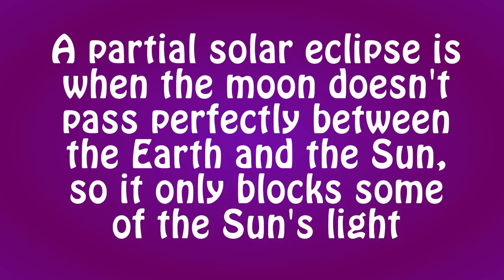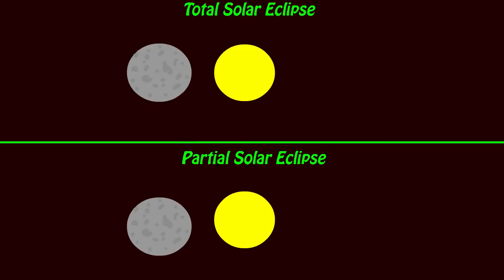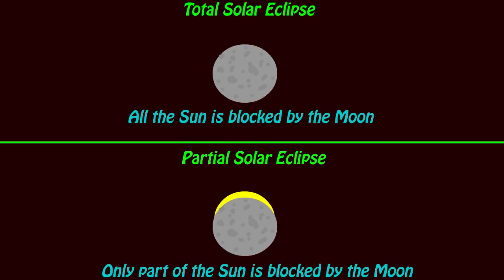A partial eclipse is when the moon doesn't pass perfectly in between the Earth and the Sun, so the moon doesn't block all of the light from the Sun — just part of it. Instead of seeing all the light blocked, only part of it is blocked, meaning you can still see part of the Sun around the outside of the moon. You can expect to see around 10 partial solar eclipses where you live each decade, so there's plenty for you to see.